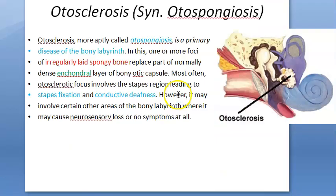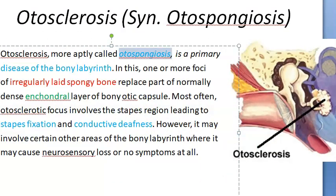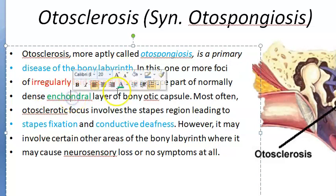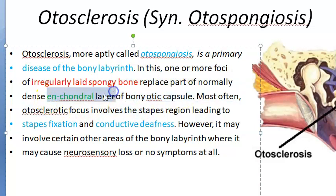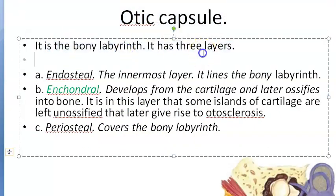Otosclerosis, more aptly called otospongiosis, is a disease of the bony labyrinth. Normally, the dense enchondral layer of the bony otic capsule should be present, but in this disease it is replaced with irregularly laid spongy bone. The otic capsule has three layers: endosteal, enchondral, and periosteal.